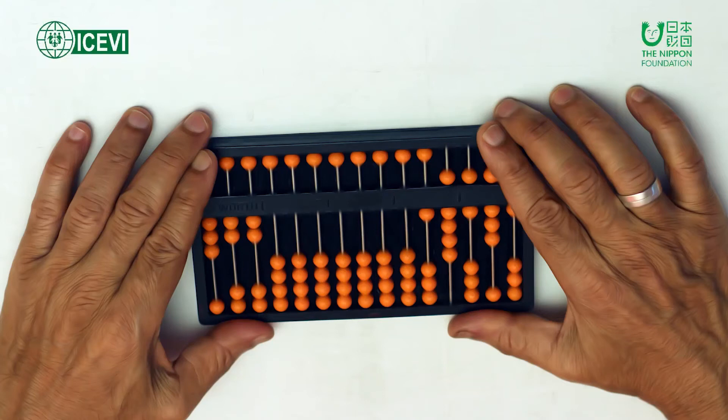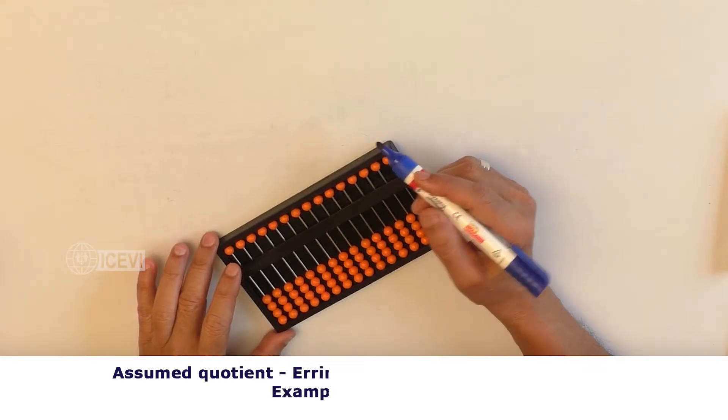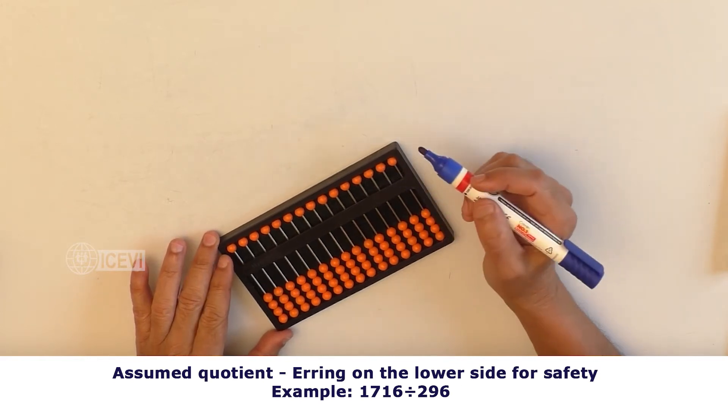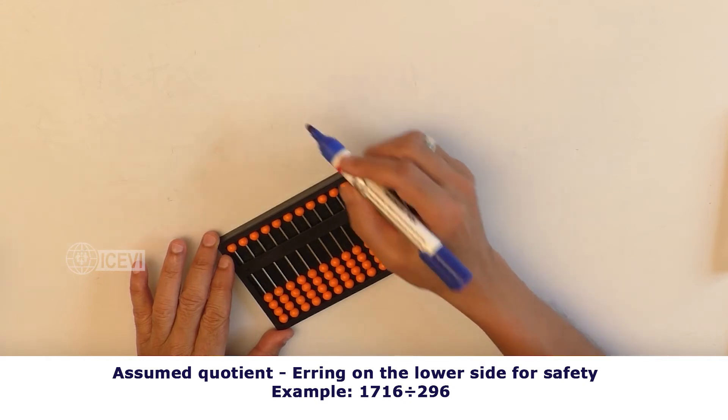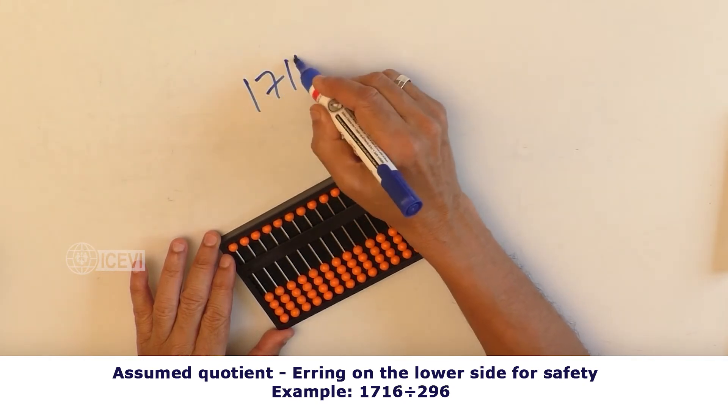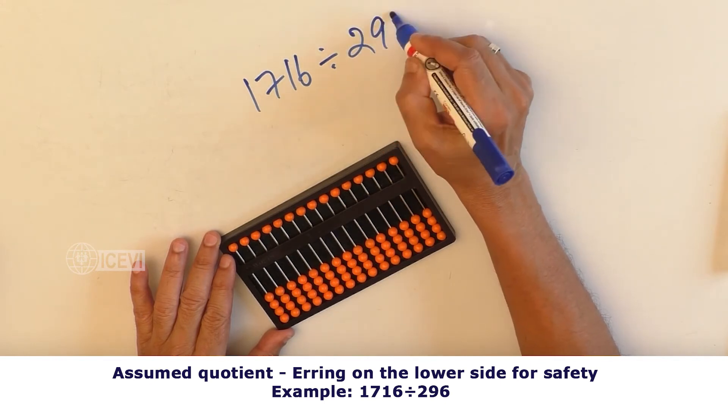The ICEVI, the Nippon Foundation, Mathematics Package for Teachers, Video Series: Abacus as a Mathematical Tool. Title of the video: Assumed Quotient - Erring on the Lower Side for Safety. Example: 1716 divided by 296.